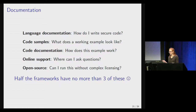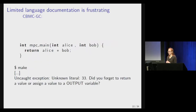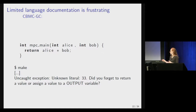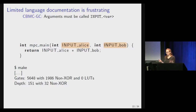Rather than lecturing about why lack of documentation makes things hard to use, I'll give illustrative examples. CBMC-GC is a circuit compiler that compiles a subset of ANSI-C. There's a lot of C documentation online, so you'd think they don't need much included. I wrote a simple program that takes two private integers, called Alice and Bob, multiplies them together, and returns the result. When I compiled it, I got an error saying 'did you forget to return a value?' — but I return it right there. In fact, CBMC-GC requires all inputs to be in a variable name prefaced with the word 'input.' You fix that and it compiles. It's not a huge deal, but it would be easier if it was written down.